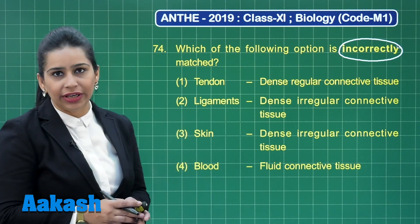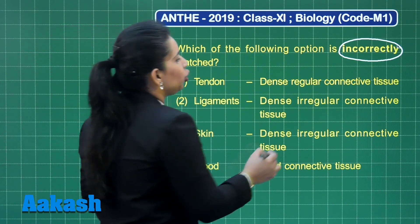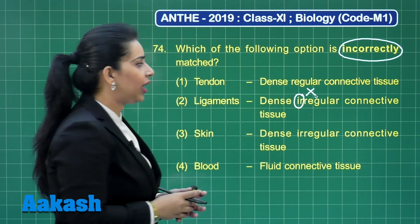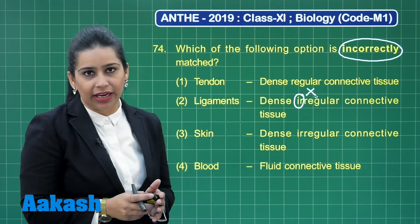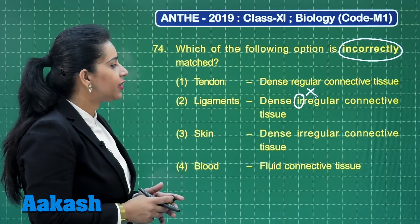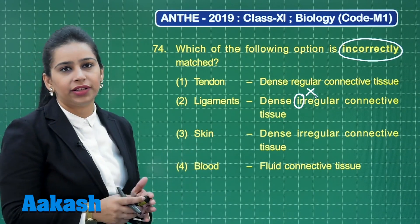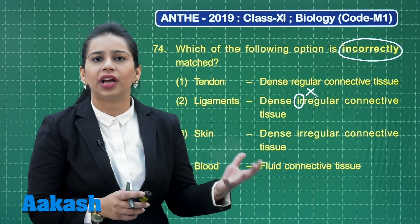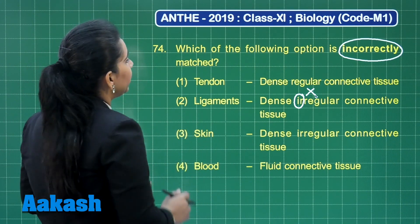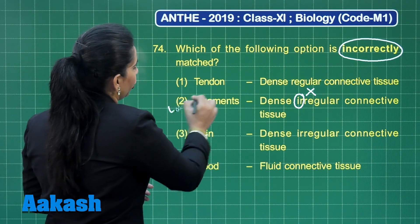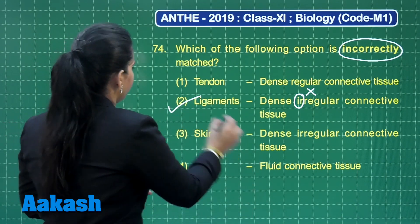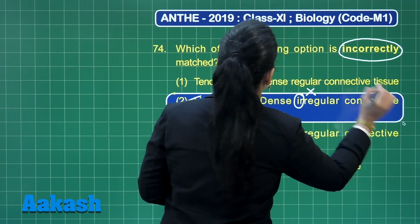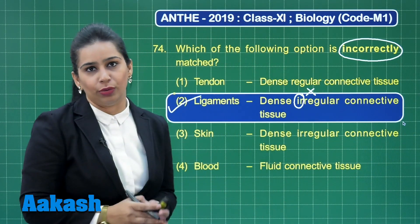Ligaments are said to have dense irregular connective tissue — this is wrong, as ligaments are also categorized under dense regular connective tissue. Skin is comprised of dense irregular connective tissue, which is true. Blood is a fluid connective tissue, which is a type of specialized connective tissue. So the answer is option 2: ligaments are comprised of dense regular connective tissue, not irregular connective tissue.